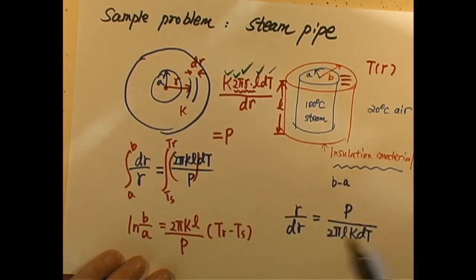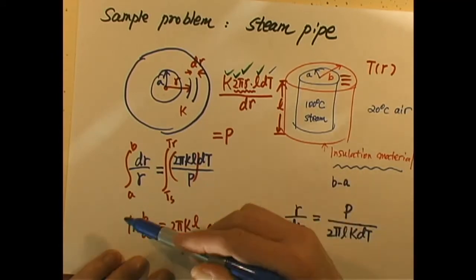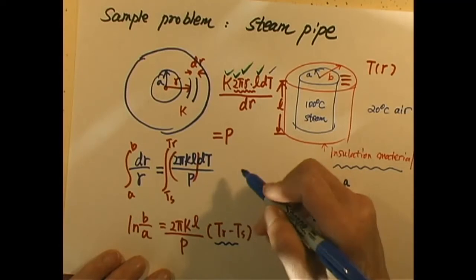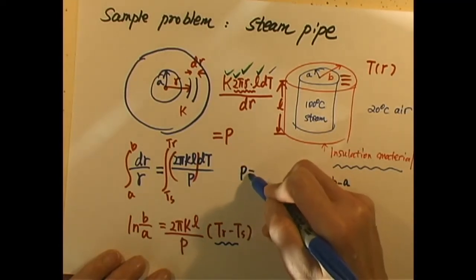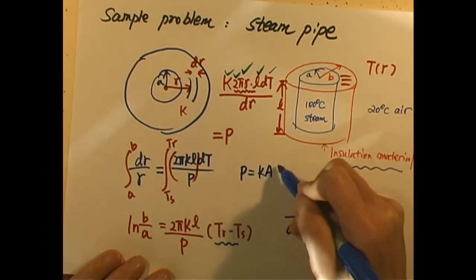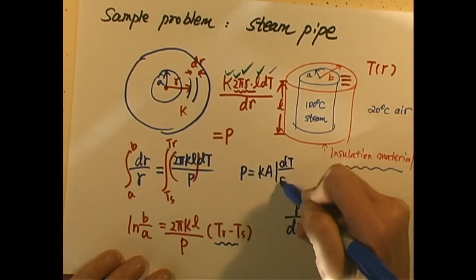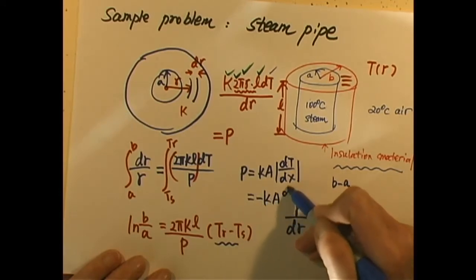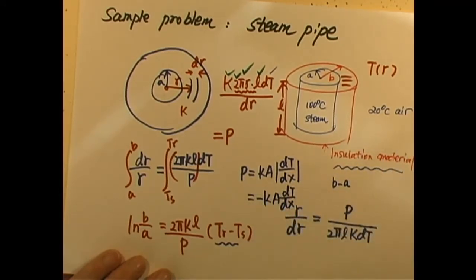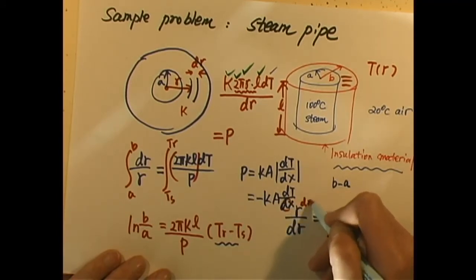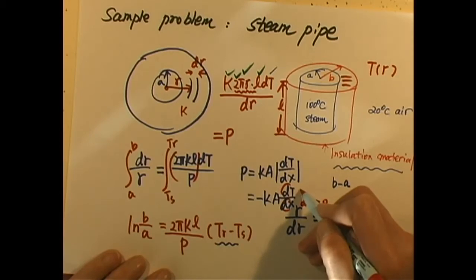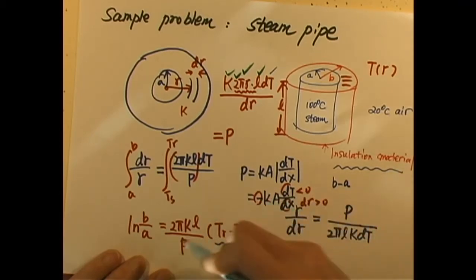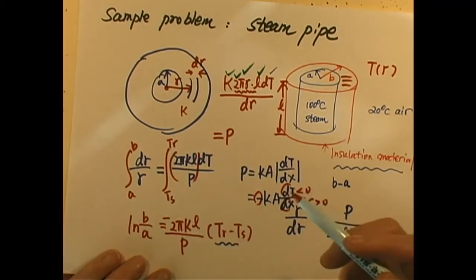Now I want to mention this. Temperature at room is less than temperature at steam, so this is a negative term, but everything else looks positive. Because B is more than A, this is positive. So if you remember at the very beginning, we have P equals KA absolute value dT over dX. If dX direction is our dR direction and dT drops, that is negative, so we need to add a negative sign.